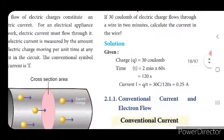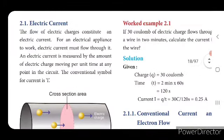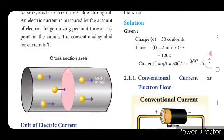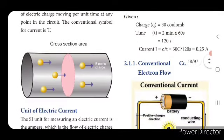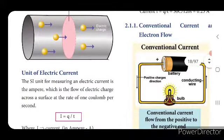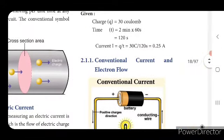What is electric current? The flow of electric charge — we call that as electric current. Electric charge is measured in coulombs (Q) and time is measured in seconds (T).